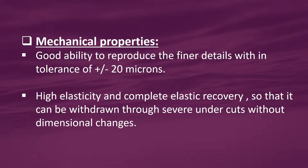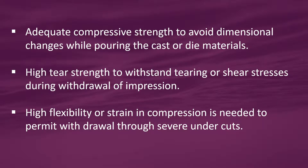Next, mechanical properties: it should have good ability to reproduce finer details within a tolerance of plus or minus 20 microns. It should have high elasticity and complete elastic recovery so that it can be withdrawn through severe undercuts without dimensional changes. It should have adequate compressive strength to avoid dimensional changes while pouring cast or die materials. It should have high tear strength to withstand tearing or shear stresses during withdrawal of the impression. It should also have high flexibility or strain in compression, which is needed to permit withdrawal through severe undercuts.